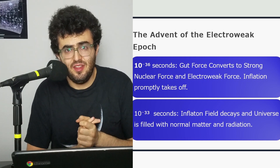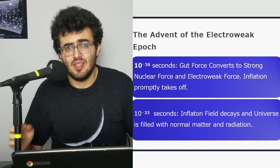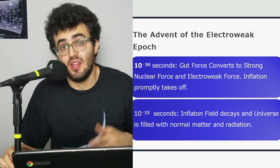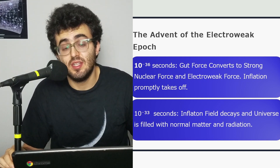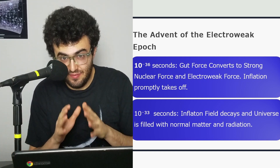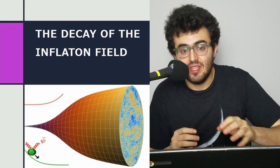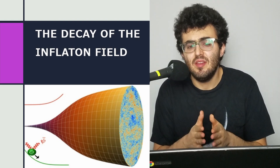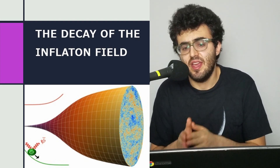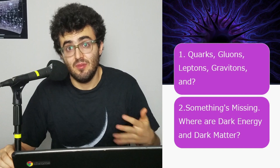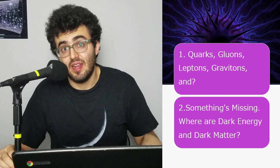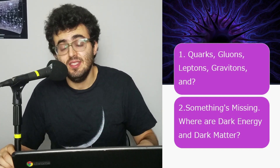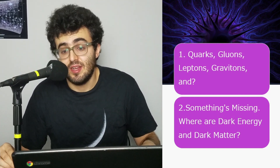At 10 to the minus 33, the inflaton field decays into the matter and radiation that we know of in our world. What exactly did the inflaton field decay into? It decayed into the particles we know about: quarks, gluons, gravitons, and leptons.